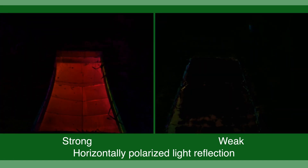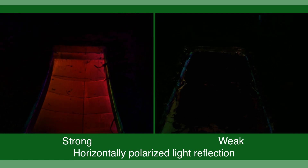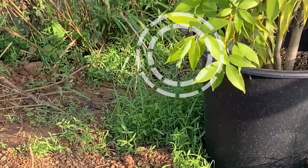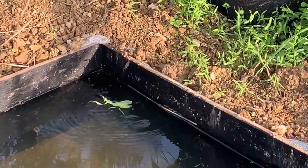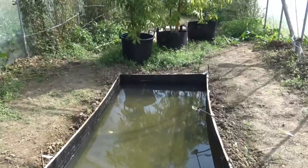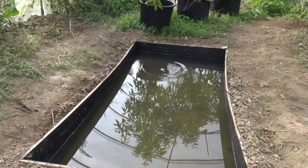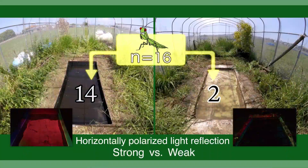To further investigate the association between the enhanced positive polarotaxis and water entry behavior of the infected mantis, we conducted a field experiment. Of the 16 infected mantis, 14 entered a deep pool, where the water surface strongly reflected horizontally polarized light with weaker light intensity.